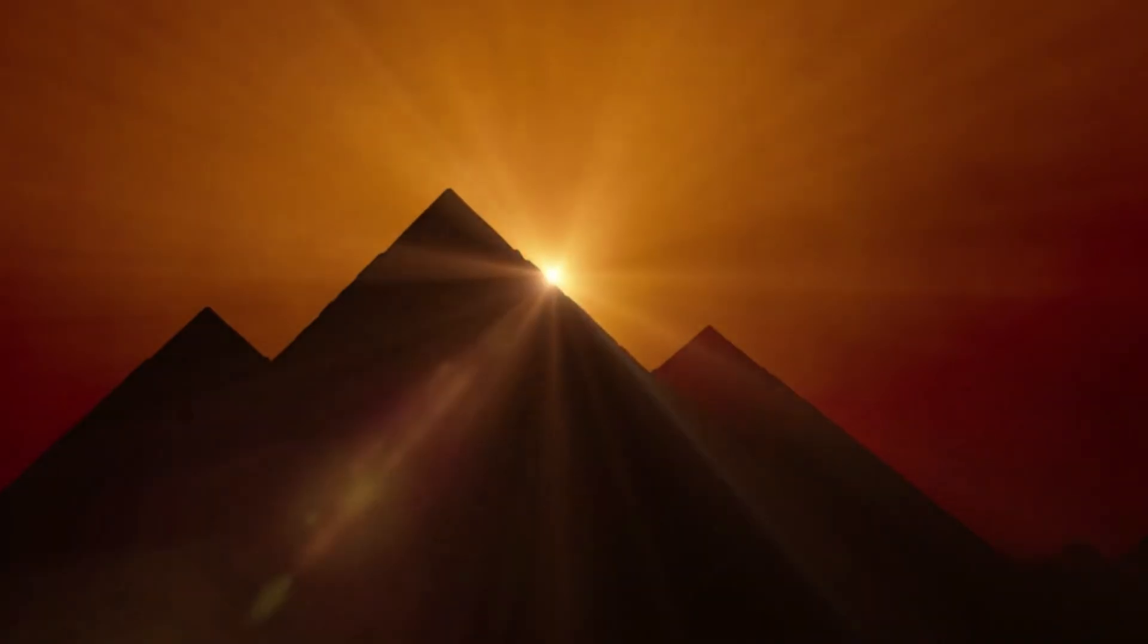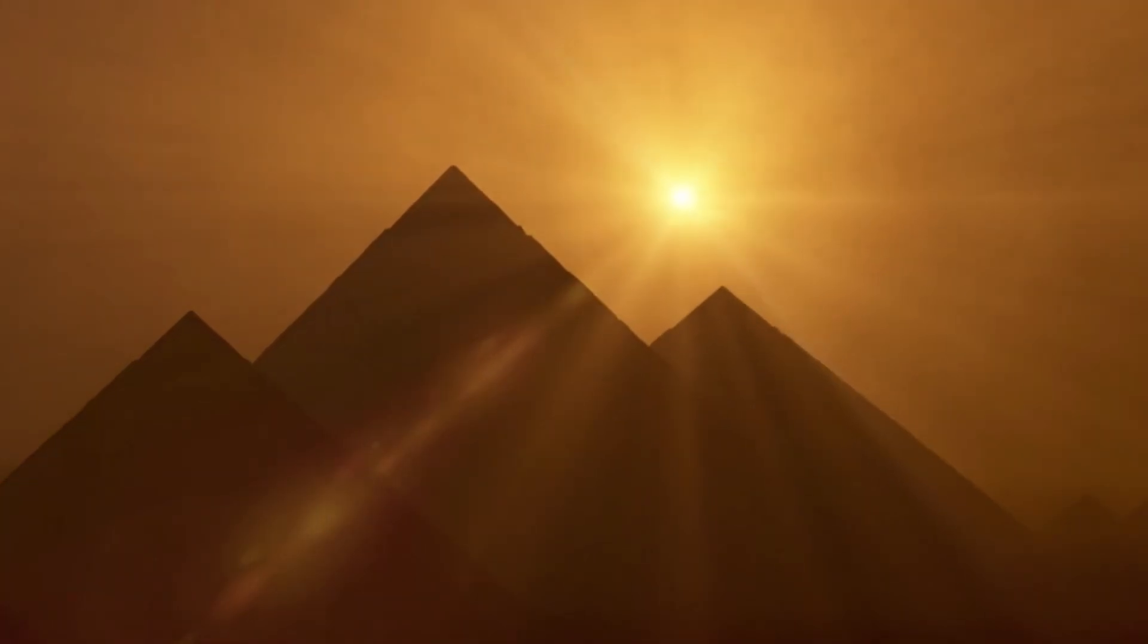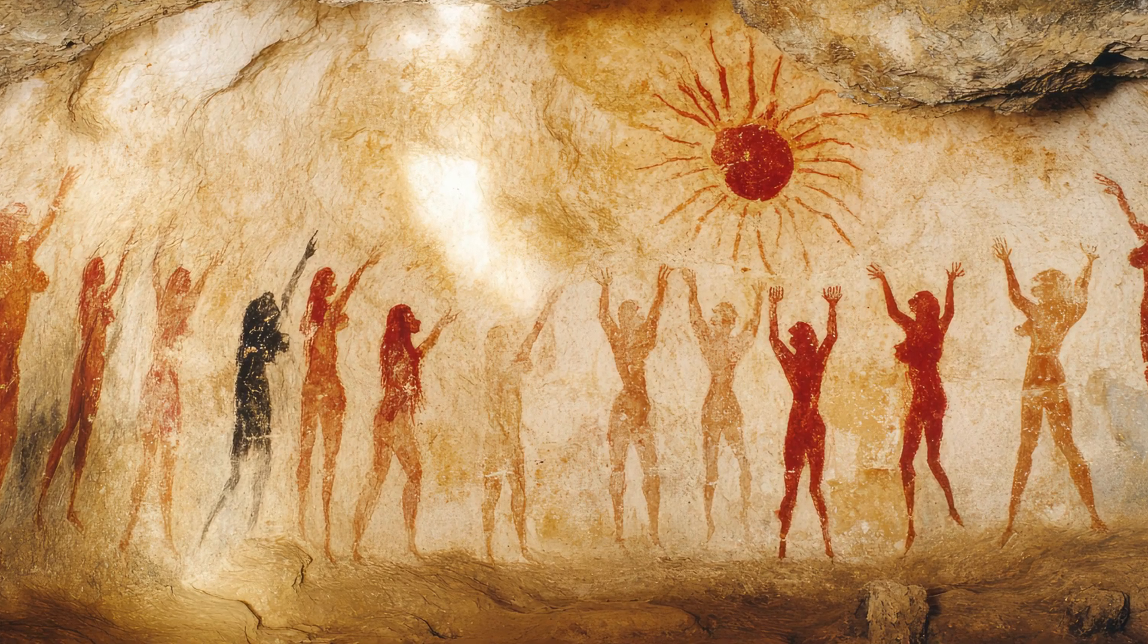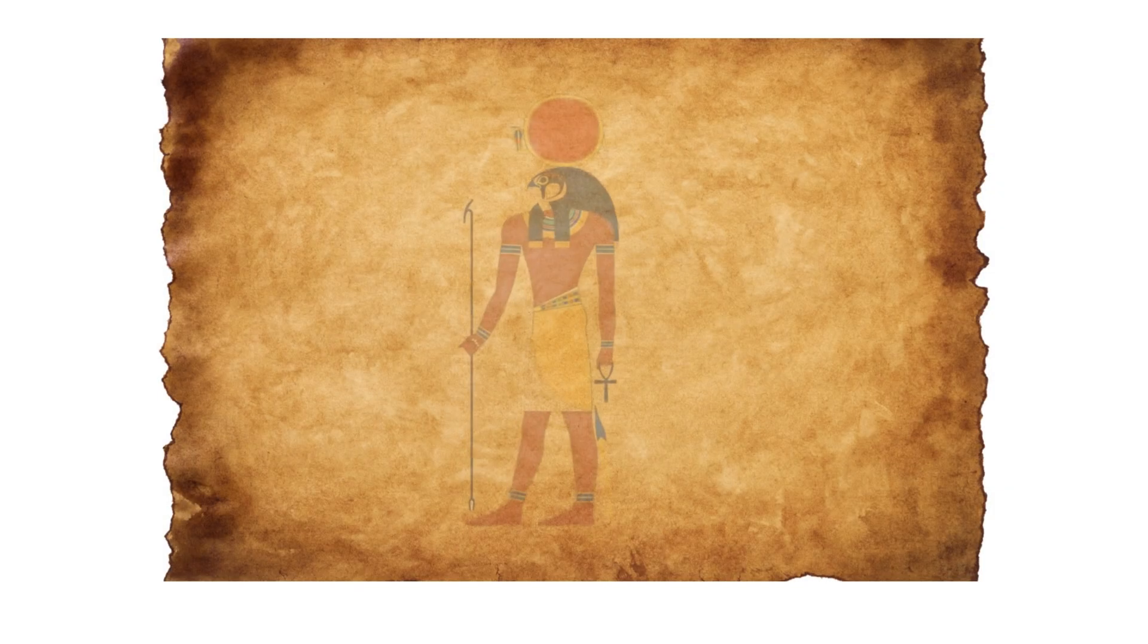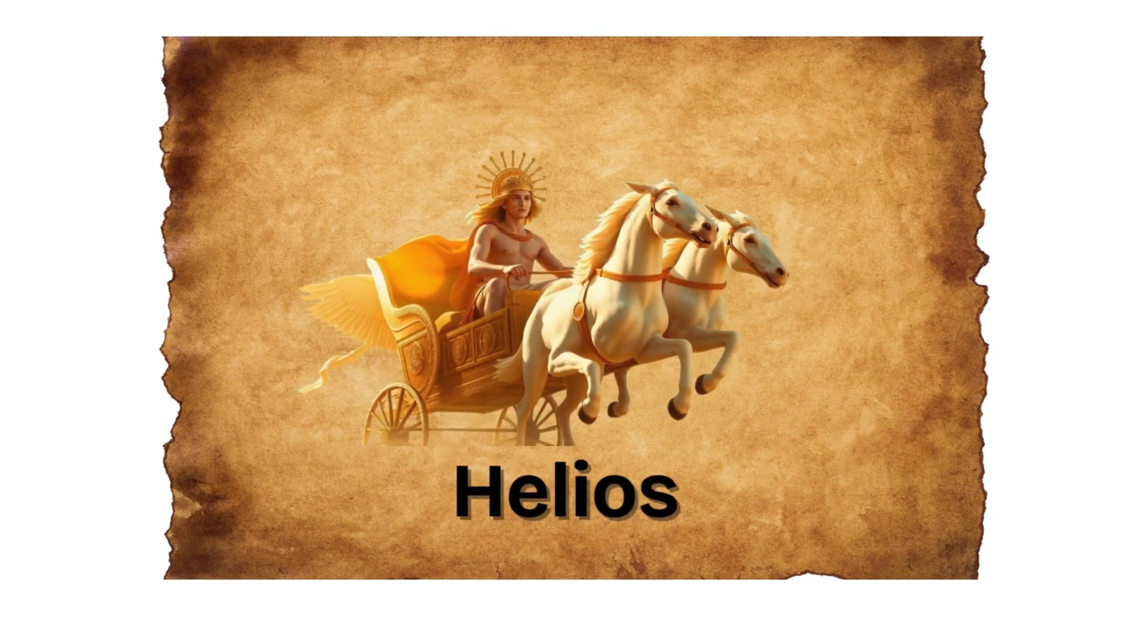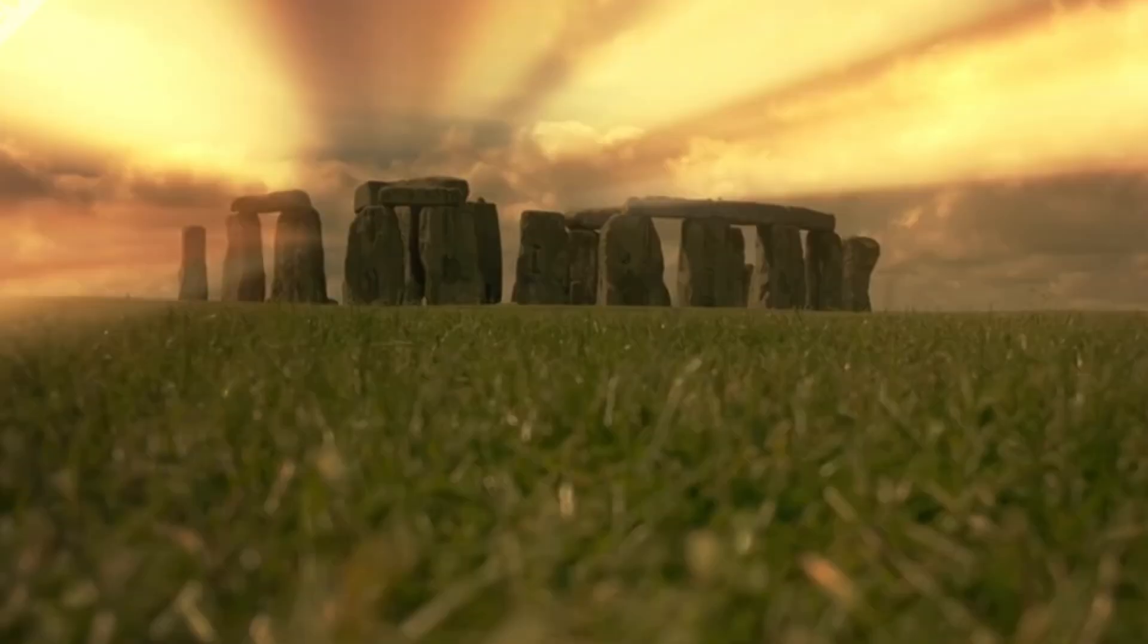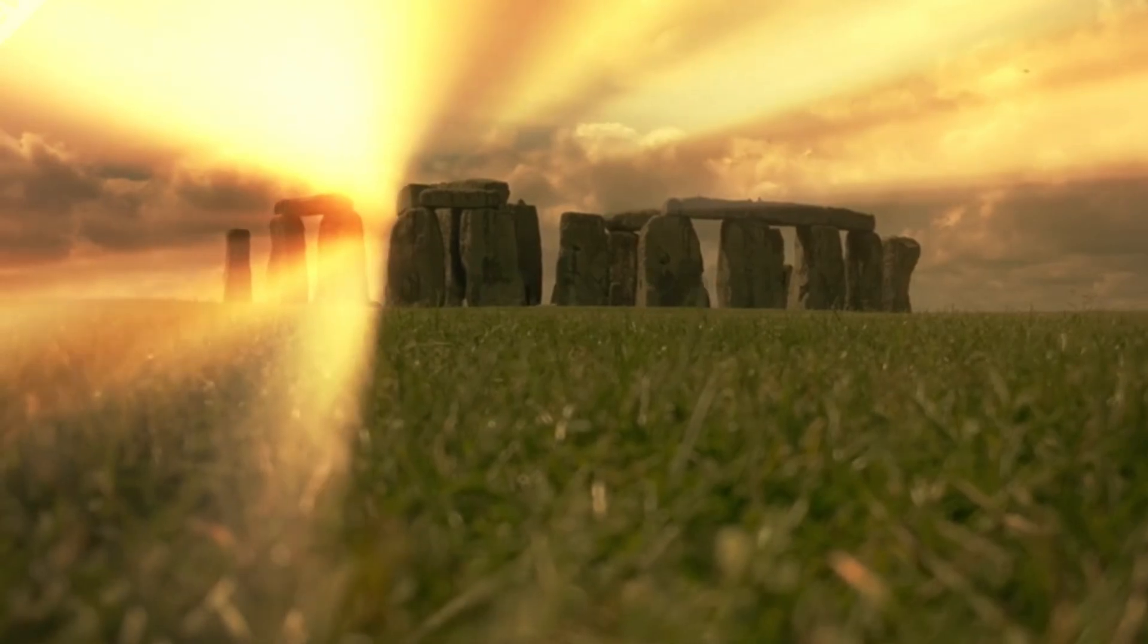For thousands of years, the sun wasn't just a light in the sky. Some civilizations worshipped it, some feared it, and some built entire belief systems around it. To the Egyptians, it was Ra, the god of all life. The Greeks imagined Helios riding a flaming chariot across the heavens. Even monuments like Stonehenge were aligned to its rise and fall.